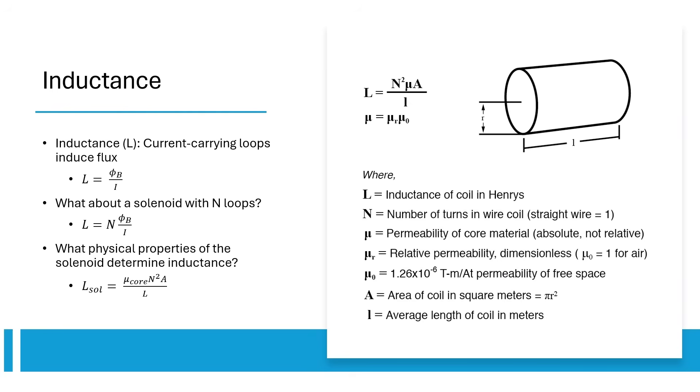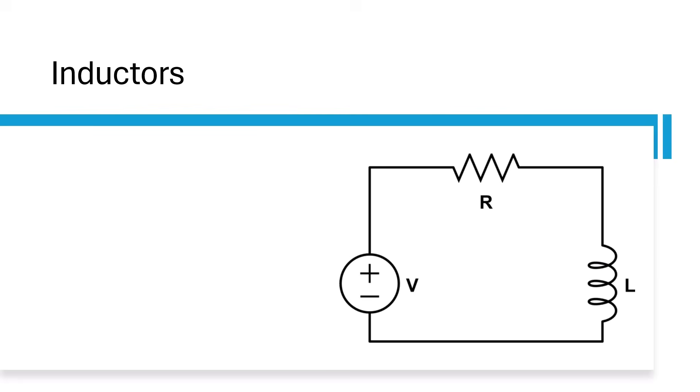We can put inductors in circuits to produce B-fields. When current increases, flux changes, and an EMF is induced with the proportionality constant being the inductance.